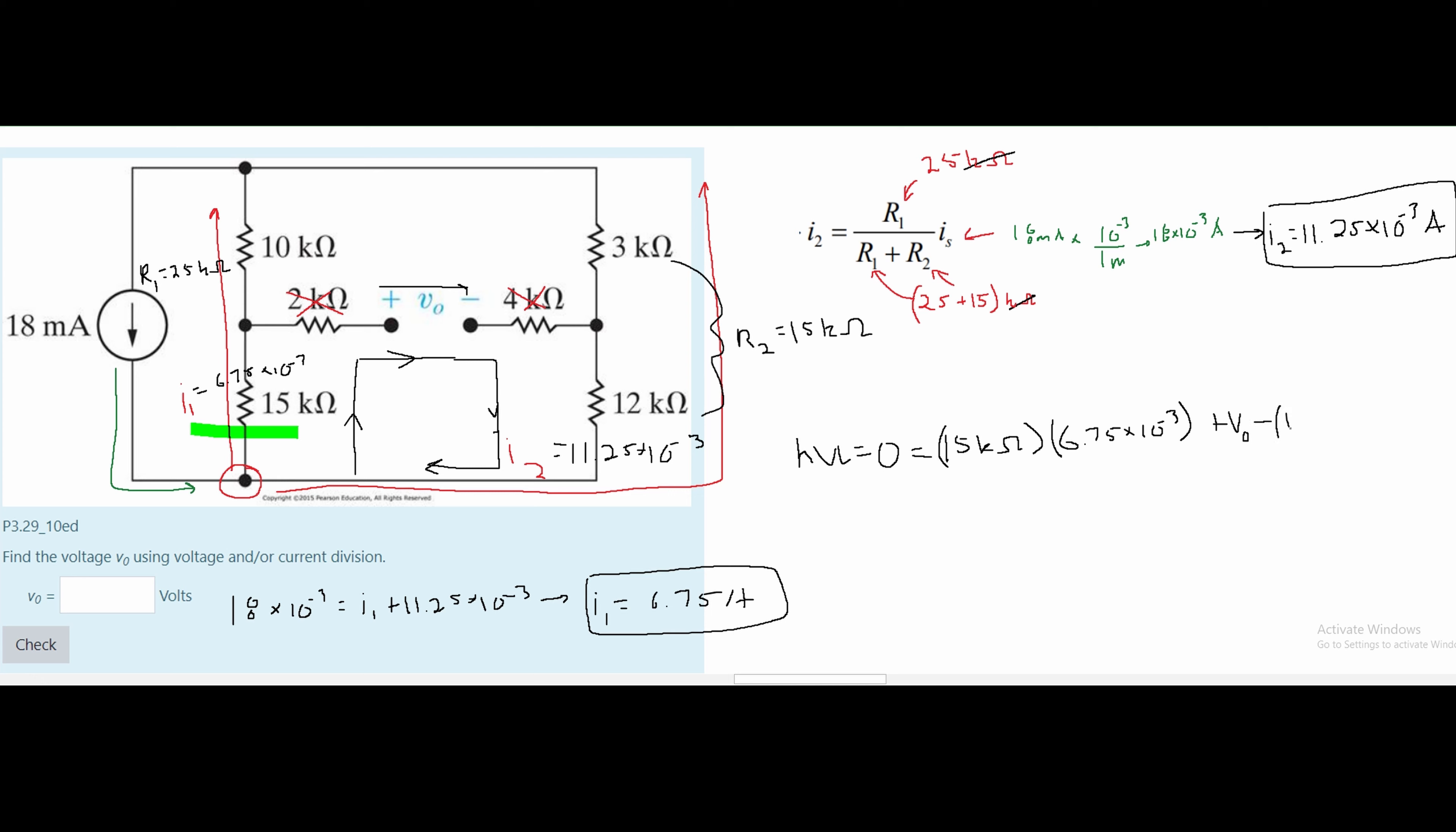And then after our minus sign we're going to have our 12kohm resistor times our 11.25 times 10 to the negative cubed amps. Plugging all this into a calculator and knowing that a kilohm is 1,000 ohms, we're going to get V0, which is our answer, is going to be 33.75 volts.